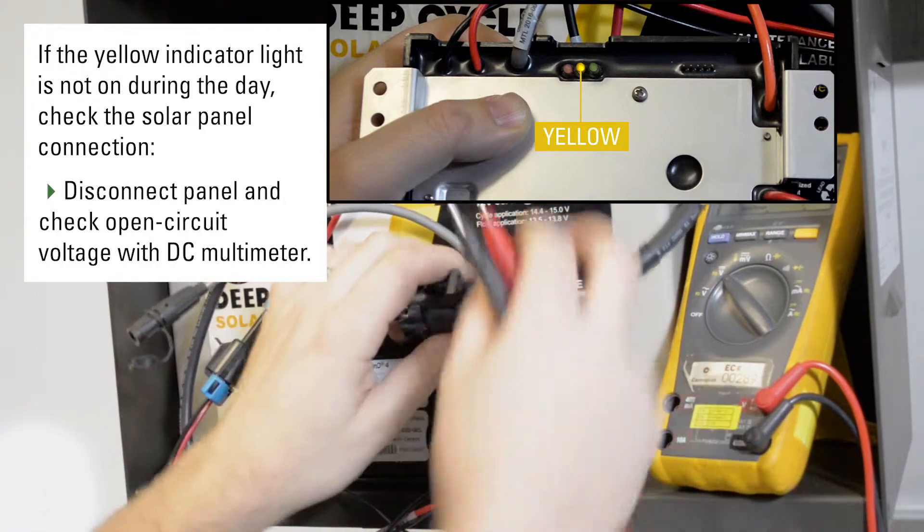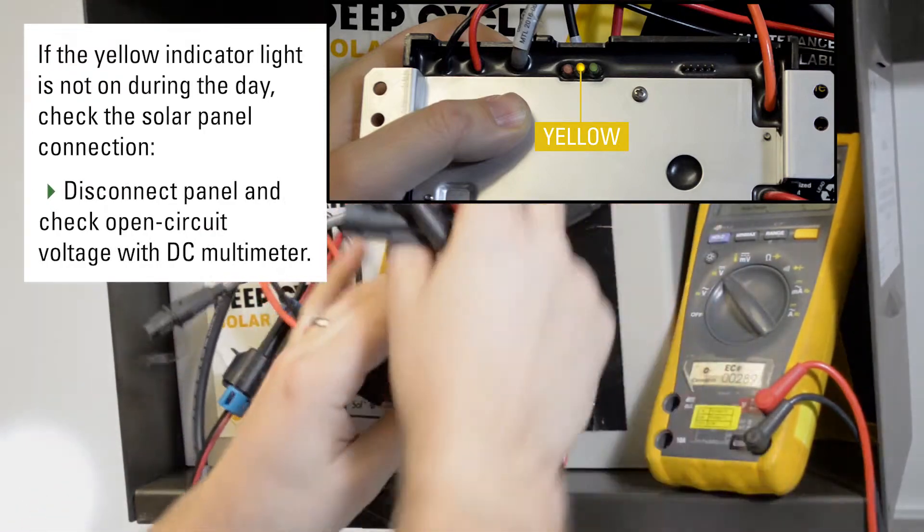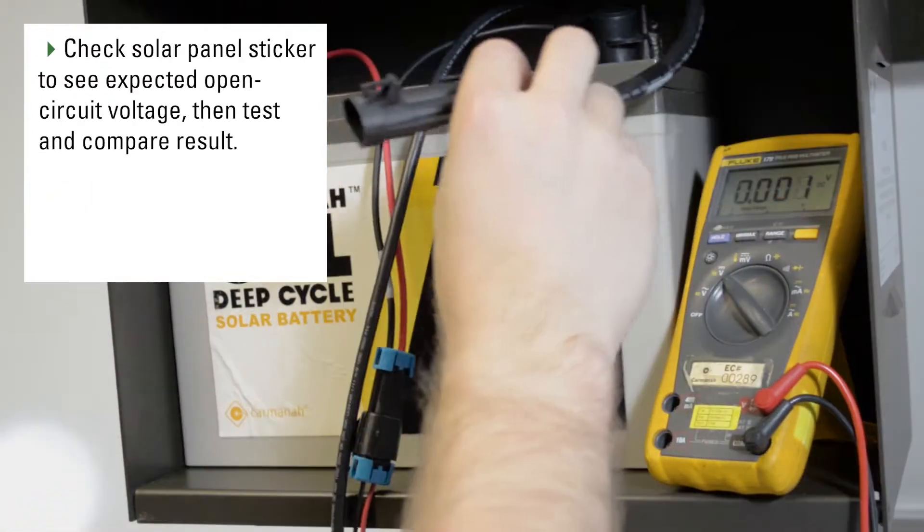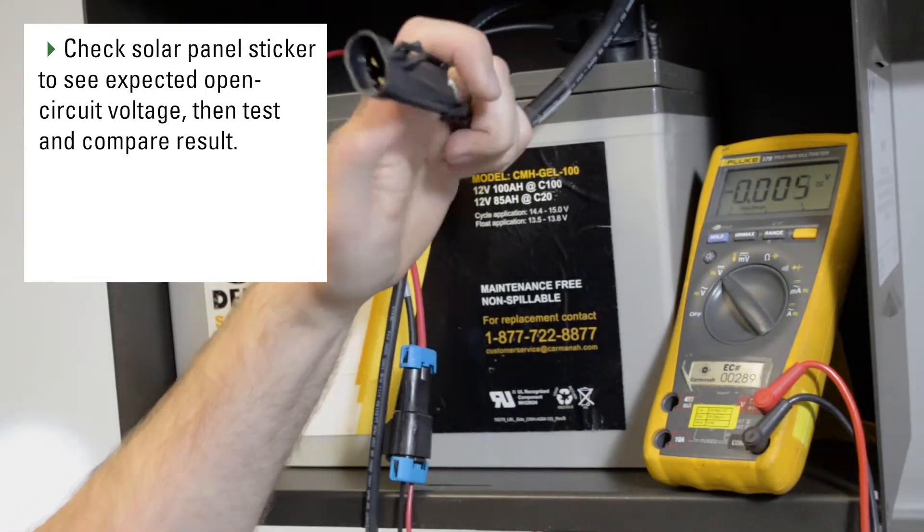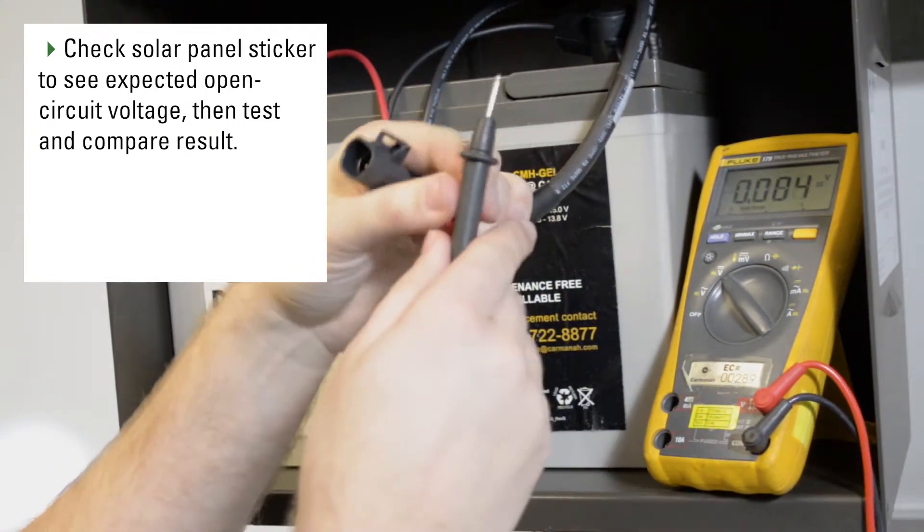To do so, disconnect the panel and check the open circuit voltage. On each panel there should be a sticker on the back that tells you the open circuit voltage of the panel.